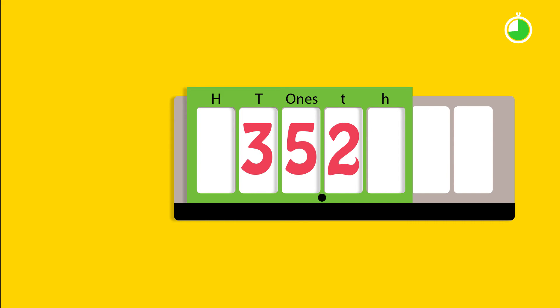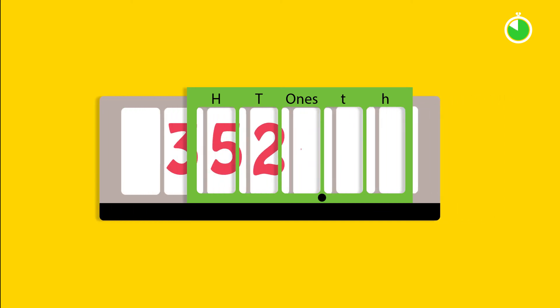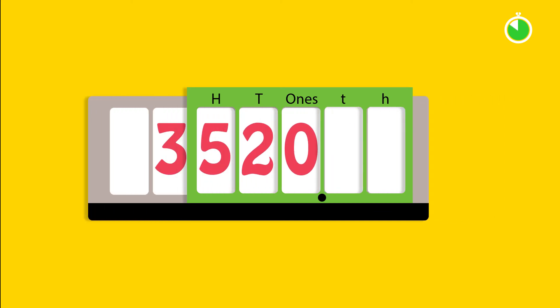Now how would you multiply this new number by 100? I could use the slider to move all the digits two places to the left. That's right. So when multiplying and dividing by powers of 10, think in terms of moving the digits rather than the decimal point.